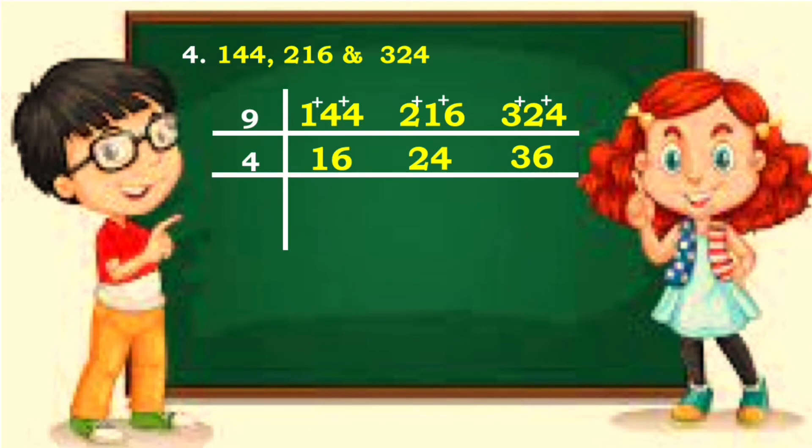16 divided by 4 is 4. 24 divided by 4 is 6. 36 divided by 4 is 9. 4 and 6 are divisible by 2 except 9. 4 divided by 2 is 2. 6 divided by 2 is 3. And then rewrite 9.